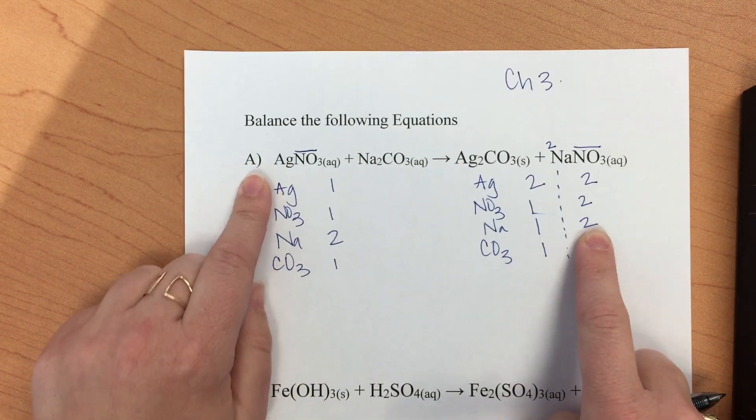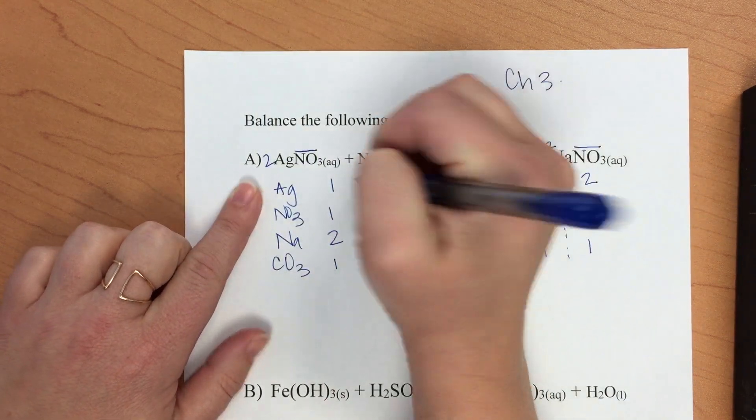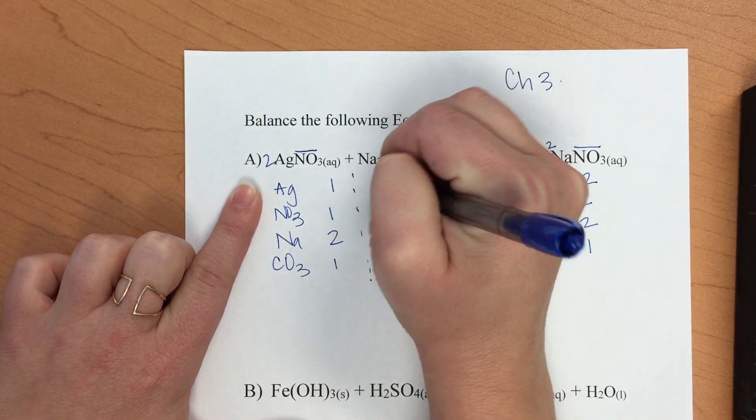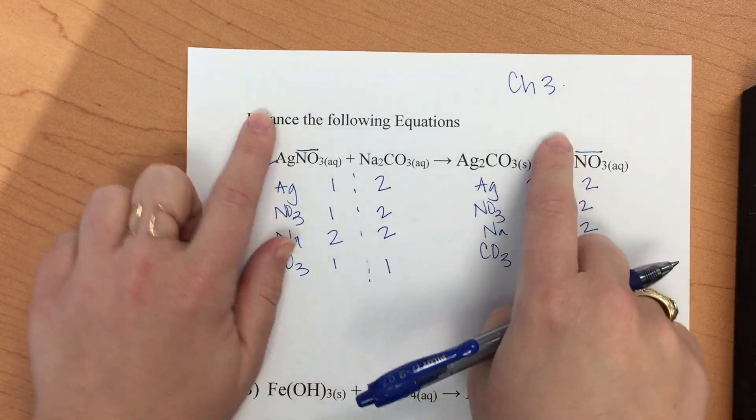We will continue over to this side and note that the silver nitrate, if we add a two in front of it, will balance our equation. So we have a two, two, two, one.